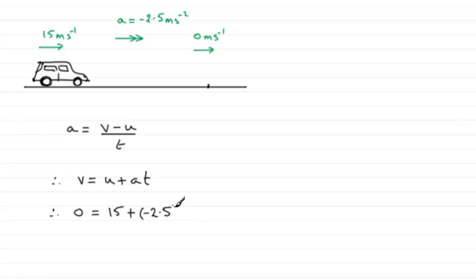If we add it to both sides, we've got 2.5t equals 15. And if we divide both sides here by 2.5, you get t equals 15 divided by 2.5.